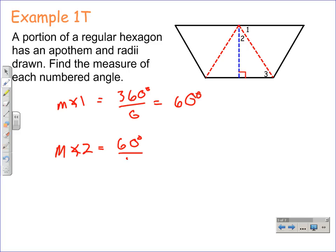The measure of angle two is 60 degrees divided by two, which is equal to 30 degrees. And we find the measure of angle three with the triangle angle sum theorem. We know the measure of angle two is 30 degrees and the right angle is 90 degrees. We add those together and subtract from 180 to get the measure of angle three.